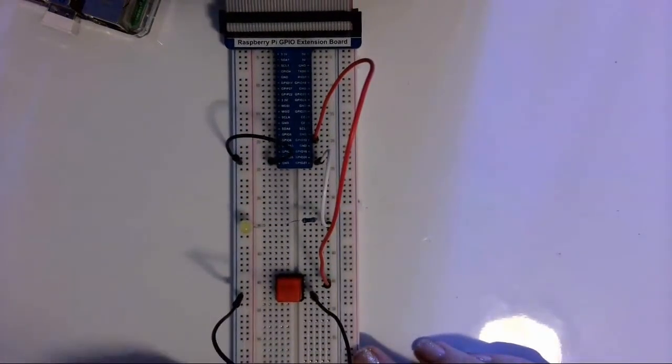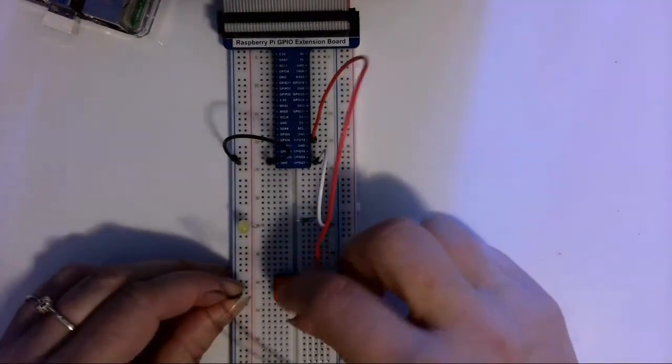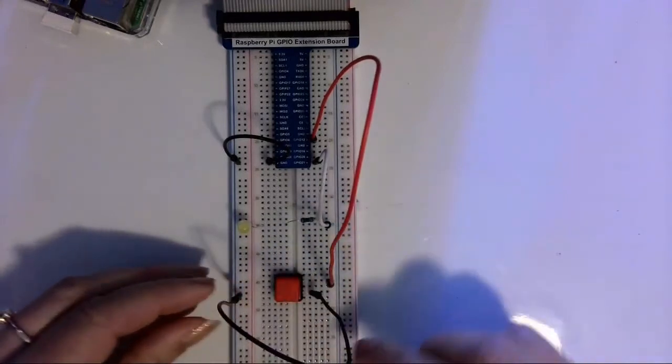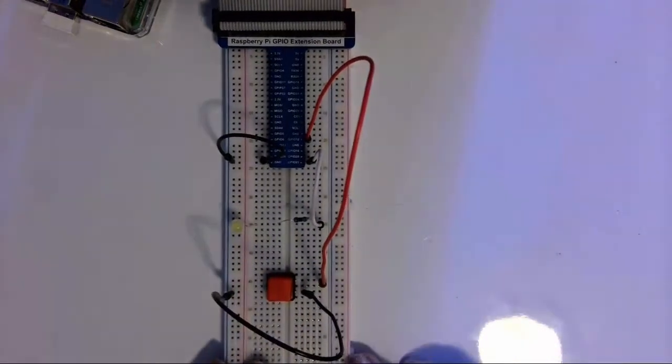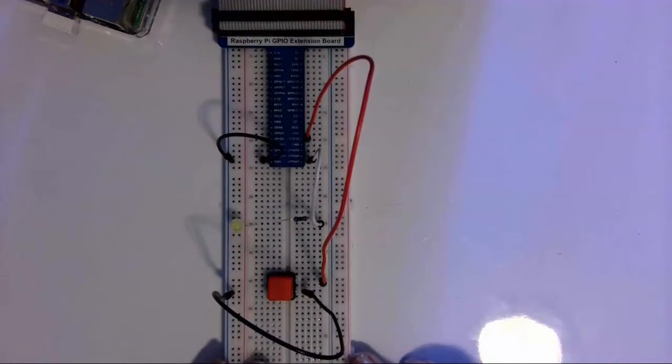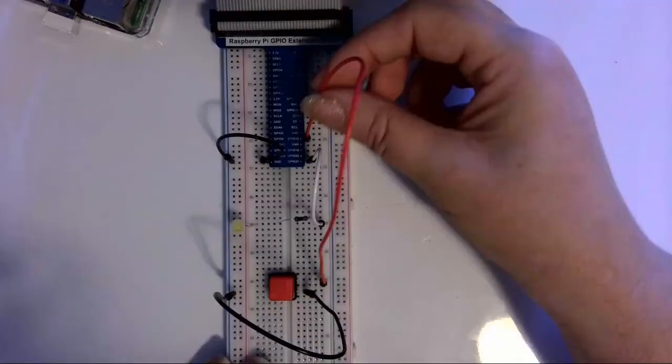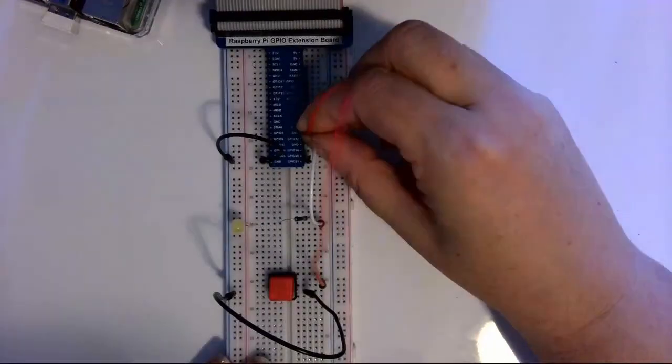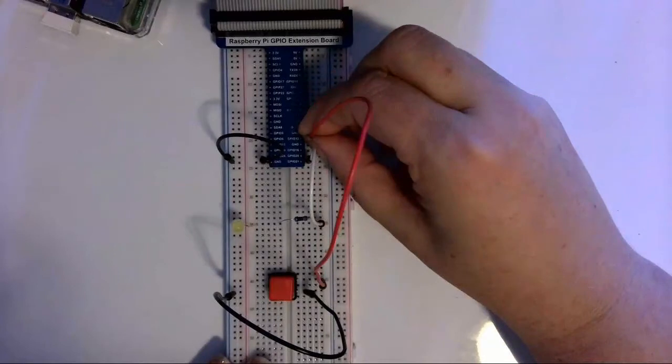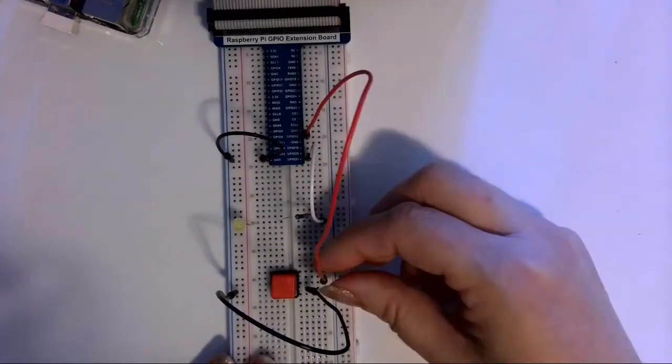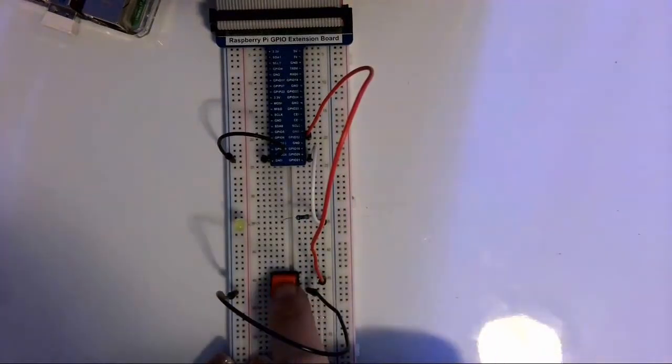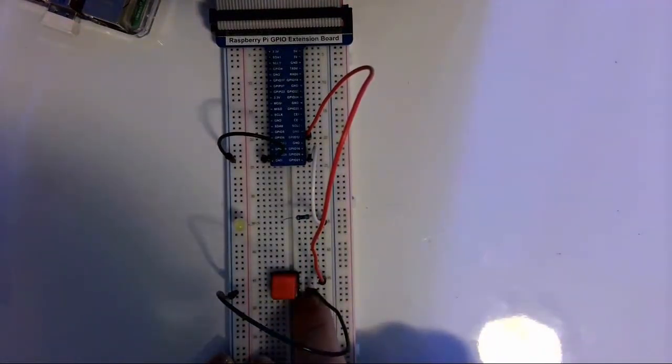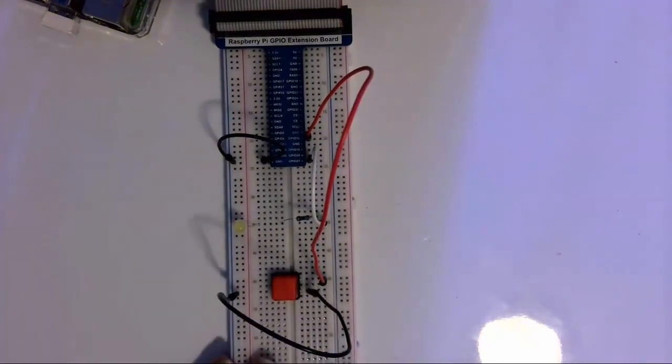So now I've got my push button controlled by GPIO pin 12, which is jumping down here to row 45 where my button is plugged in, and then the output where my button is on row 47 is jumping out to the ground.